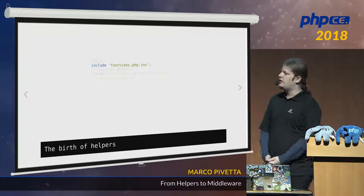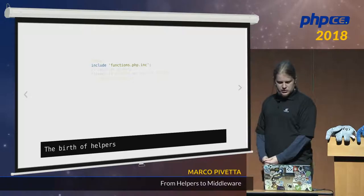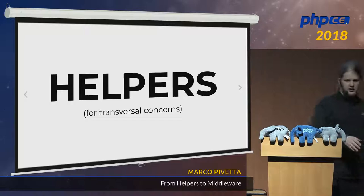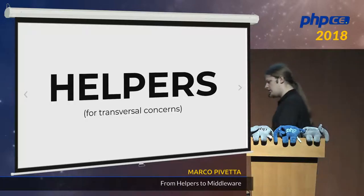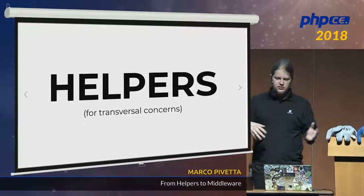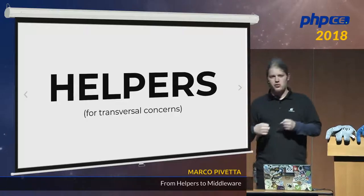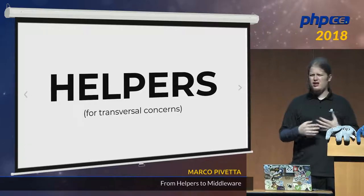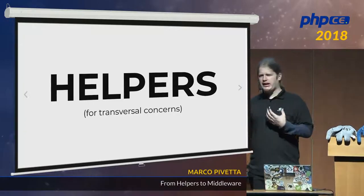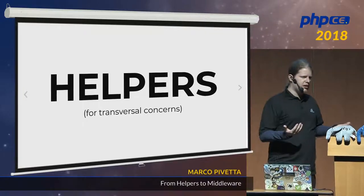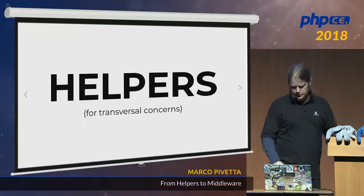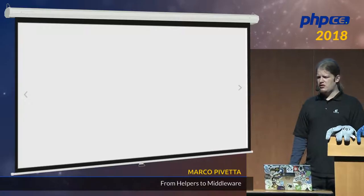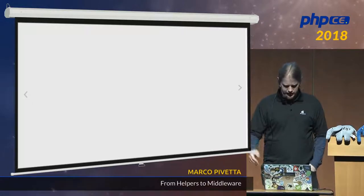The helper is this idea that you want to do something that has nothing to do with the current script but you want to do it in a clean way — so you try to extract it and make it a bit more reusable. It was all about reducing the amount of copy-paste. There was no testing, no real clean code idea. Yes, there were books about it, but they were mostly unknown. I think Clean Code was 1998 — people learned how to read later.